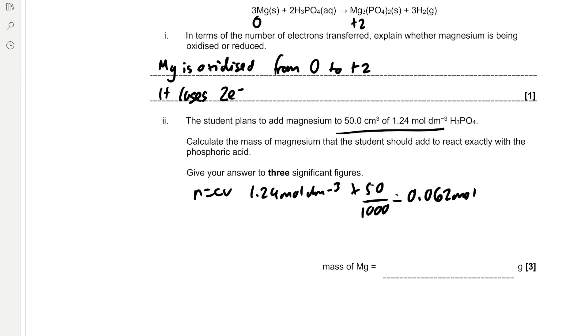So 1.24 mol/dm³ multiplied by 50 cm³ divided by 1000 to convert to dm³ is 0.062 moles. And then if we look at the equation, we can see that we have a ratio of 3 to 2, magnesium to phosphoric acid. So to find the moles of magnesium, we have to multiply the moles of phosphoric acid by 1.5, which is 0.093 moles.